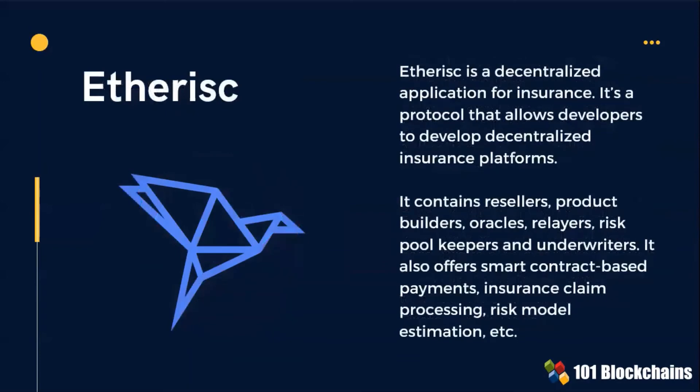Etherisk is a decentralized app for insurance. It contains resellers, product builders, oracles, relayers, risk pool keepers, and underwriters. This decentralized application allows developers to develop decentralized insurance platforms.